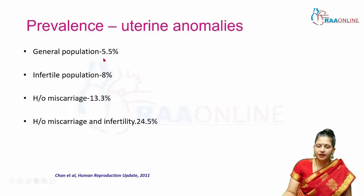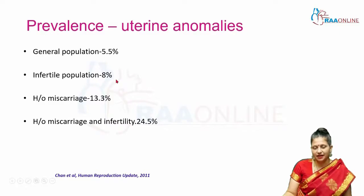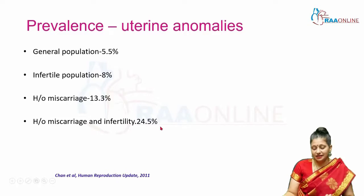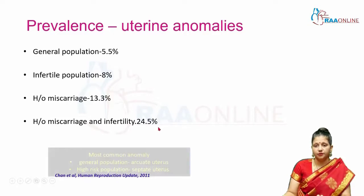In the general population, the prevalence of uterine anomalies is 5.5%, while in the infertile population it is slightly higher at around 8%. In patients who present with recurrent miscarriages it is around 13.3%, and in patients who give a history of both miscarriages and infertility, the prevalence may be as high as 24.5%.